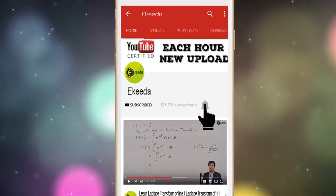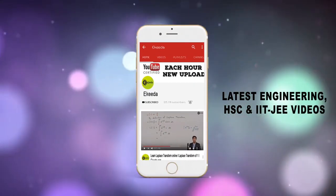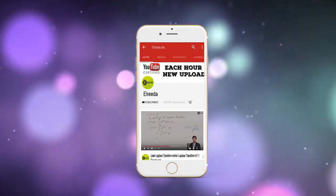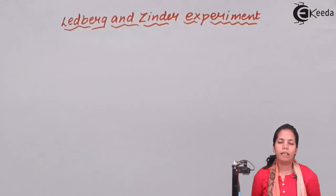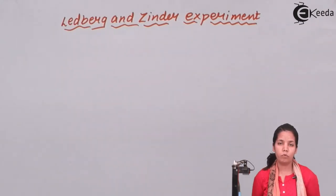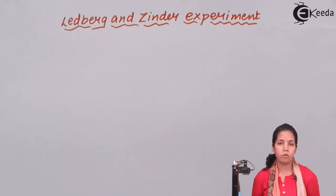Do subscribe to Ikeda channel and press the bell icon to get updates about the latest engineering, HSE, and IIT JEE Main and Advanced videos. Frederick Griffith proved that there was a phenomenon called transformation, where bacterial species could transfer something from one bacterial species to another, demonstrated through his experiment on mice.